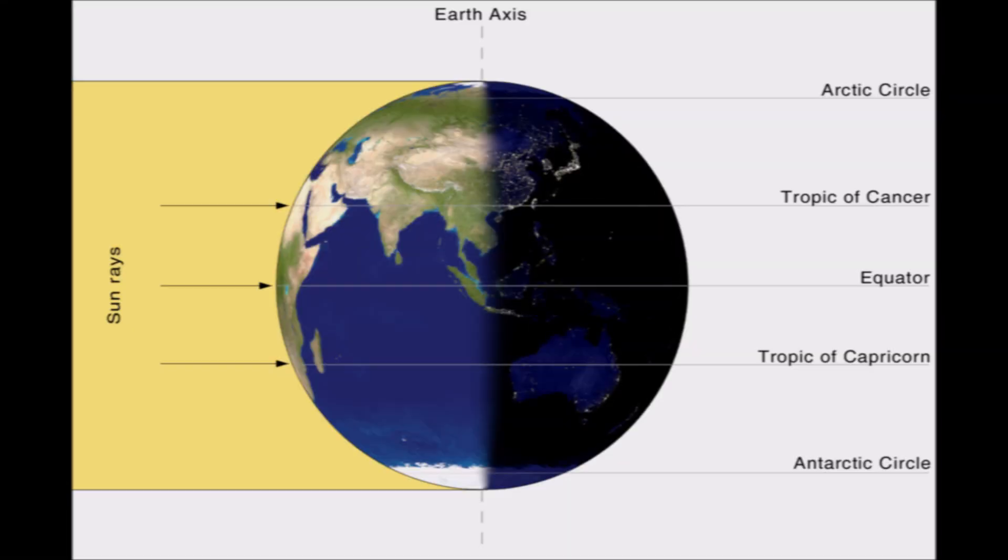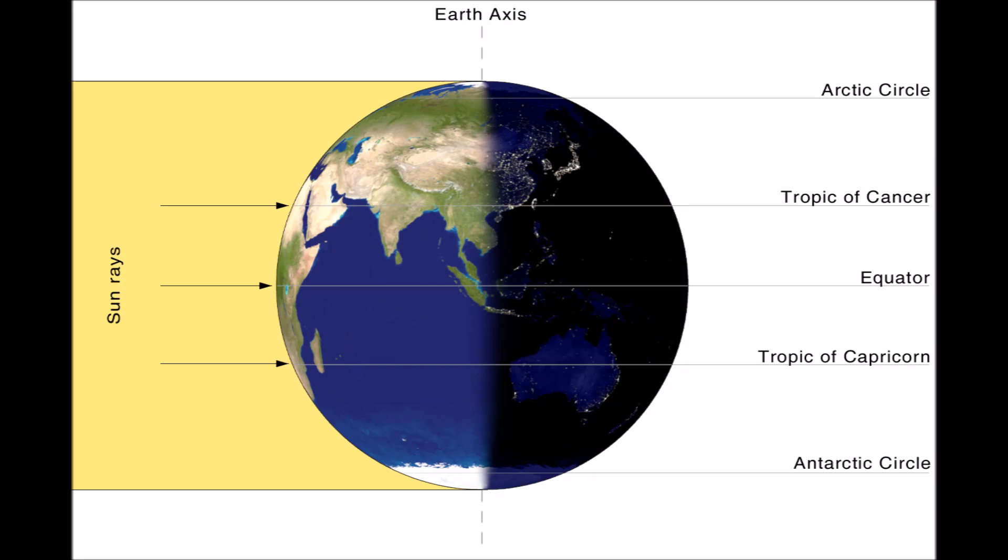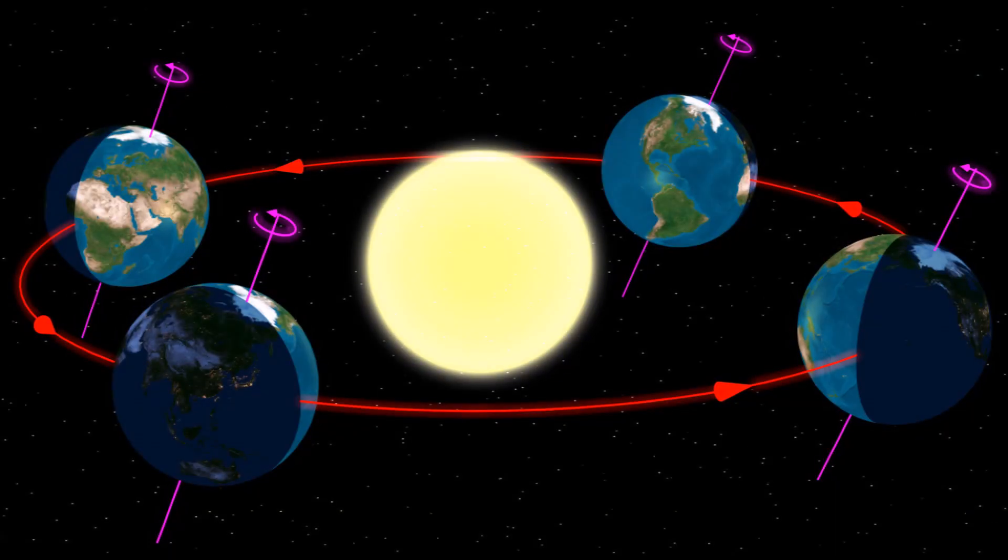During the equinox, the line of sun and shadow on the Earth, dividing night from day, runs directly north and south, the only times in the year it will do so.